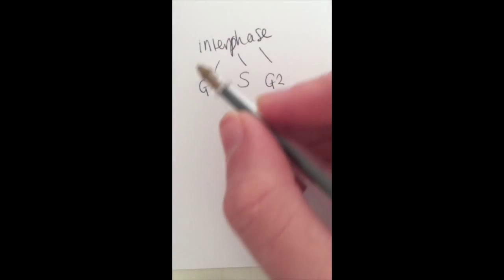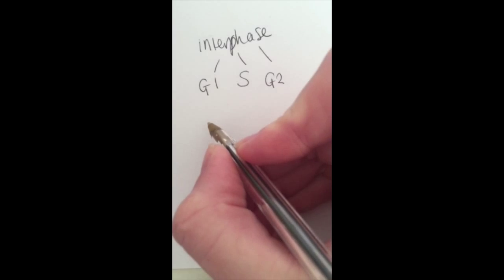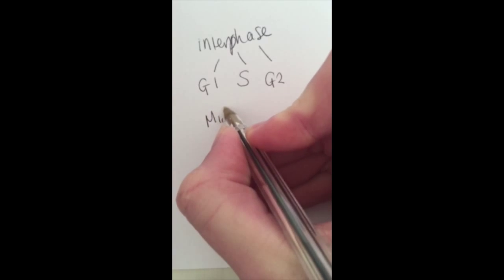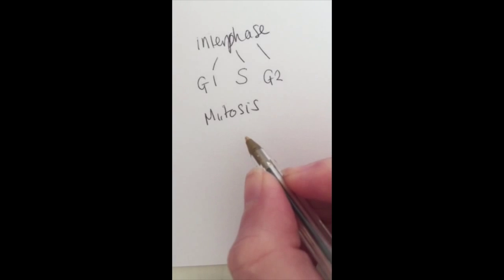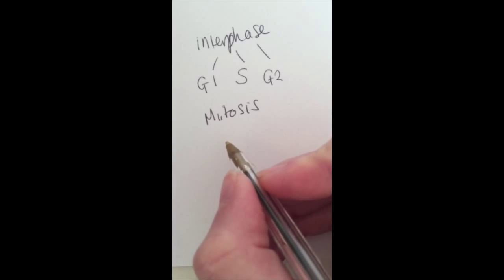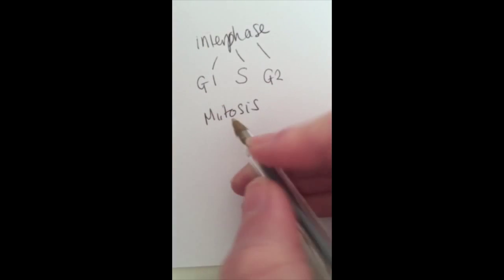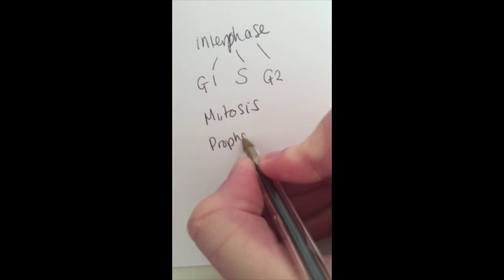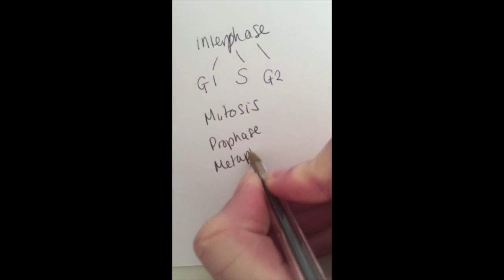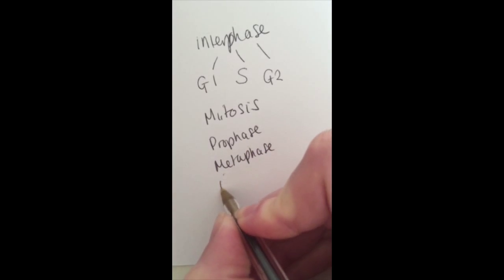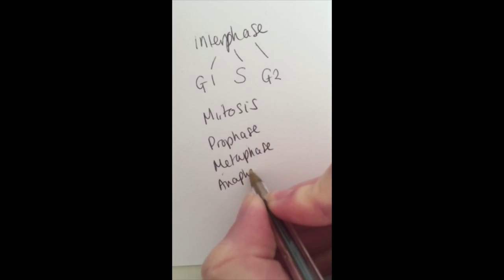After those, that's when we actually go into mitosis. You can remember mitosis in different ways. Some people remember IPMAT, so the I for interphase and the P for prophase, then metaphase, anaphase, and telophase.